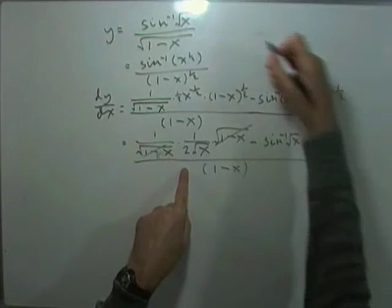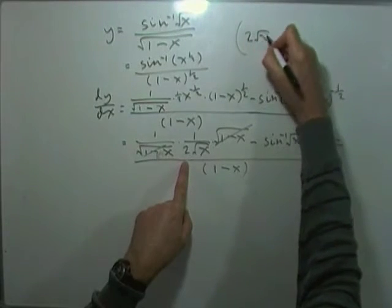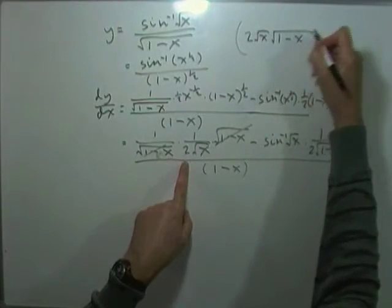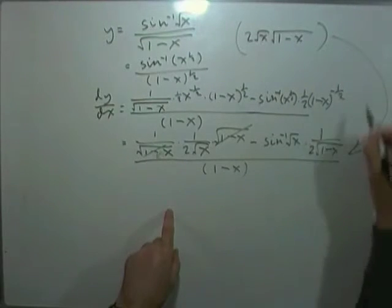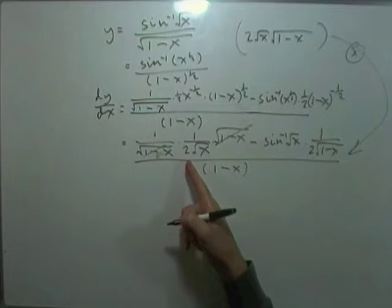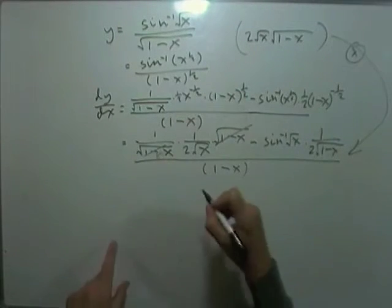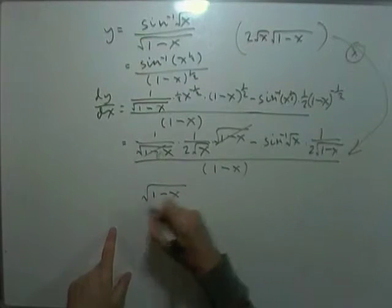Multiplying everything by, I'll just put it at the top here. Multiplying everything by 2 root x times the square root of 1 minus x. Multiplying everything by that. So the first part, the 2 would cancel out. The root x would cancel out. And that would simply leave me with a square root of 1 minus x.